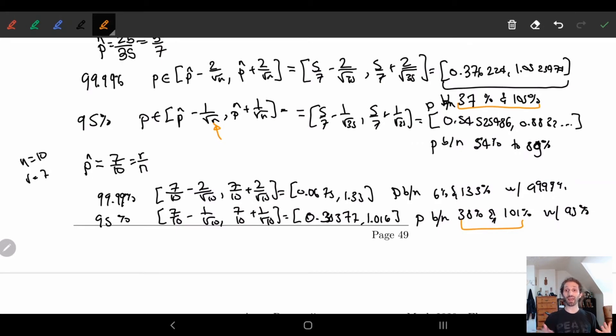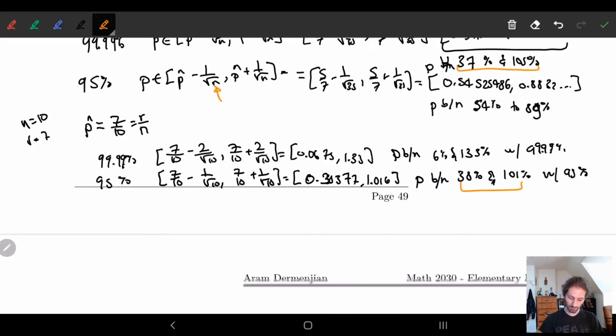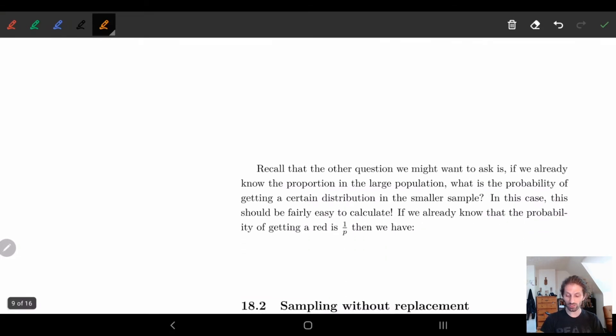The higher we make our n, the more probable we are in finding our actual probability. And that will actually give us a nice distribution or nice way of approximating things.